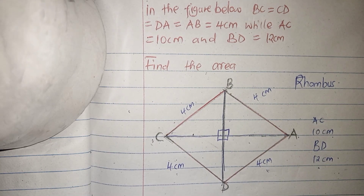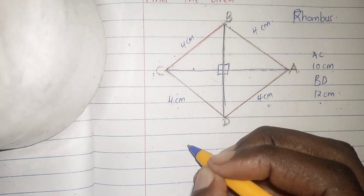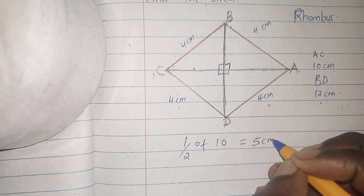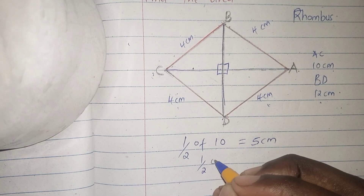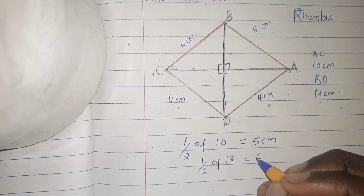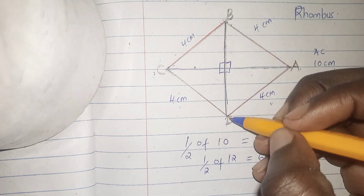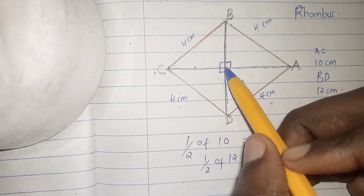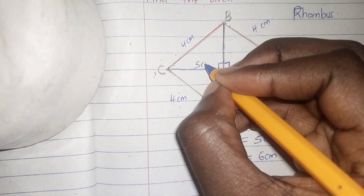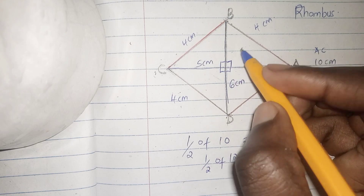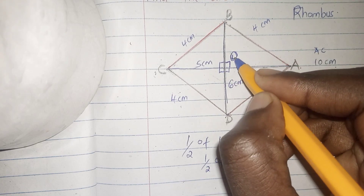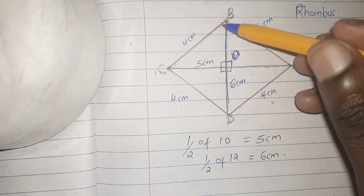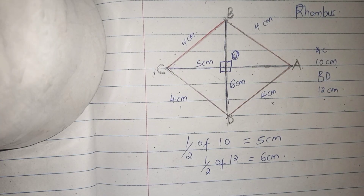We take half of each diagonal: half of 10 is 5 cm, and half of 12 is 6 cm. So from one end to the center is 6 cm, and from the center to C is 5 cm. We'll call CO the height of this triangle.